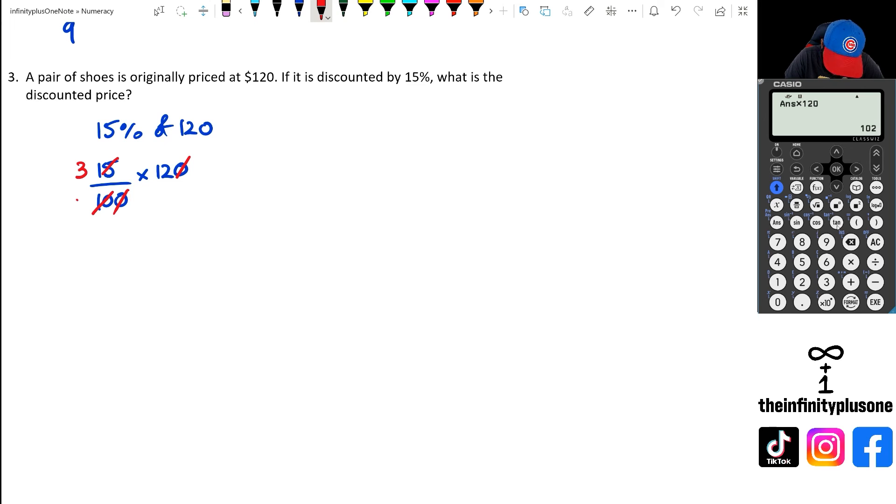And then now I could actually work with the 12 and the 2. So 12 divided by 2 is 6, 2 divided by 2 is 1. And so what I'm left over with is 3 times 6, which equals to 18. So now I can go 120 take away 18 equals 102.